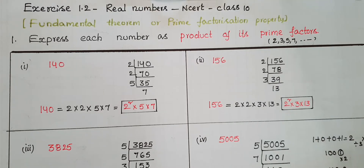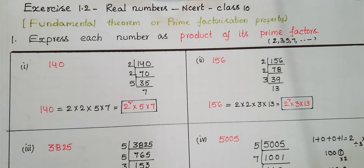Hello everyone. Today I am going to tell the solution of the first problem from Exercise 1.2, Real Numbers, NCERT Class 10. These problems are based on the Fundamental Theorem of Arithmetic, or prime factorization property. The theorem states that we can express any composite number as a product of its prime factors, and those prime factors are unique.